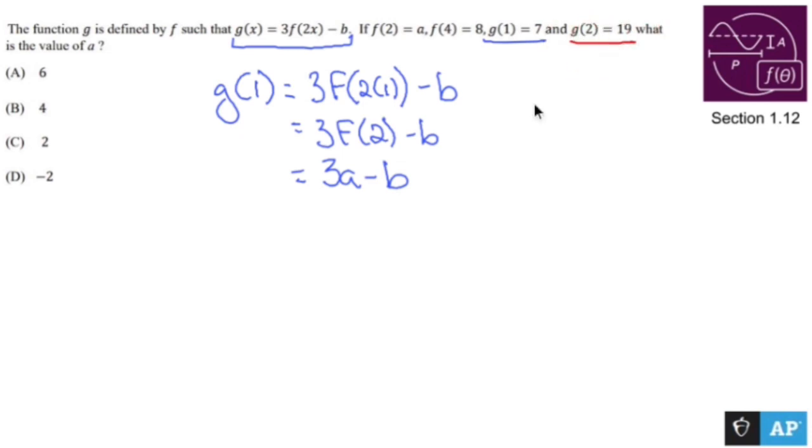Let's find g of 2. g of 2 is going to be 3 times f of 2 times 2, replace x with 2, minus b. That becomes 3 times f of 4 minus b.